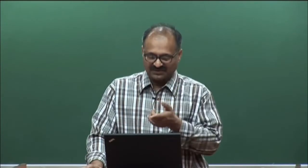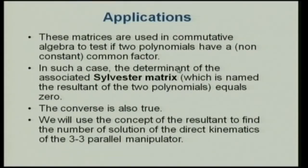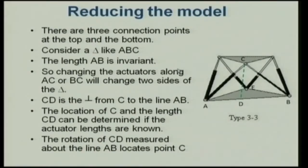We use this to find the number of solutions to the direct kinematics of the 3-3 parallel manipulator. In this configuration, there are 3 connection points on top and 3 at the bottom, with each bottom point connecting to 2 top points and vice versa. This is called the 3-3 manipulator and the platform on top retains 6 degrees of freedom.